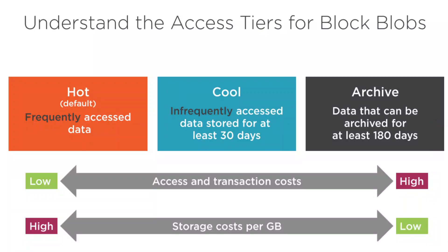Looking at the pictorial representation — this diagram was created some months ago, but since then Microsoft introduced a new tier called cold. So now the order is: hot, cool, cold, and archive. The cool and cold tiers are both for infrequently accessed data. The difference is that cool has a minimum storage duration of 30 days, cold has 90 days, and archive data must be stored for at least 180 days.